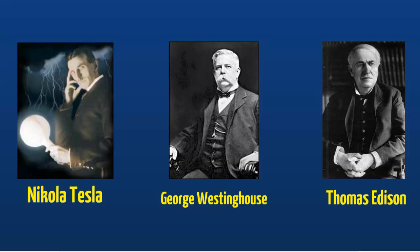For his formal training, Tesla attended both the Austrian Polytechnic Institute and the University of Prague, where he studied physics and advanced mathematics. He worked for a couple of different companies in Europe and tried to interest them in his ideas for an alternating current motor, but with no success. So in 1884, Tesla immigrated to the United States in an attempt to convince Thomas Edison to back his ideas. He arrived in America with four cents in his pocket and a letter of recommendation from Charles Batchelor, a European business associate of Edison's.